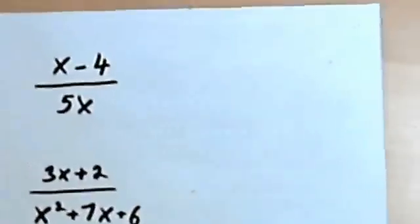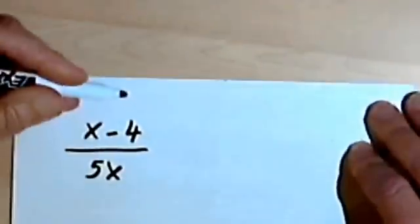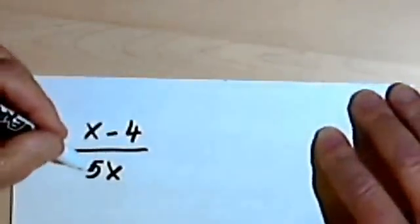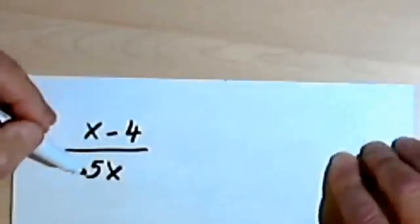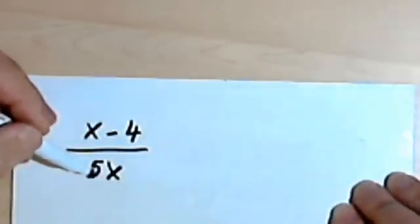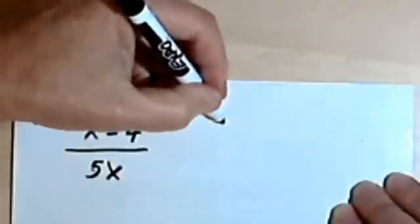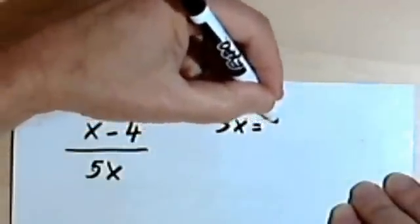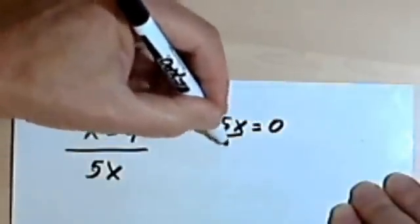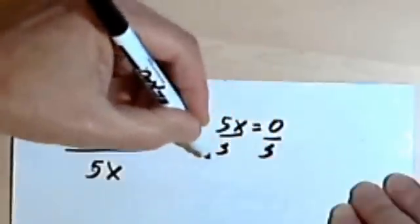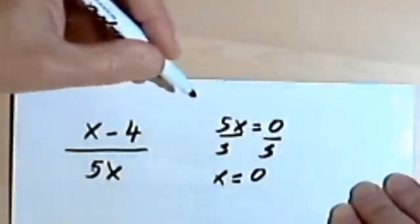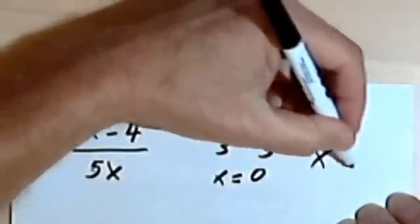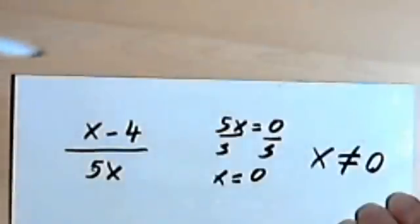Here are a few more examples. Okay, I've got x minus 4 equals 5x. And remember, I don't care about the numerator. I just want to make sure the denominator cannot be zero. So I'll write 5x equals zero, dividing both sides by 5. I'm going to get x equals zero divided by 5 is zero. So once again, x cannot equal zero.